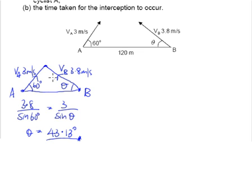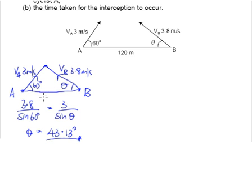That will give us the time for B to travel from this point to the point of collision. Alternatively, we can choose to find the distance here and divide by the speed of A — we take the distance that A has to travel divided by the speed of A, and we will get the same time. So in order to find distance, we need to incorporate an element of distance into our diagram.